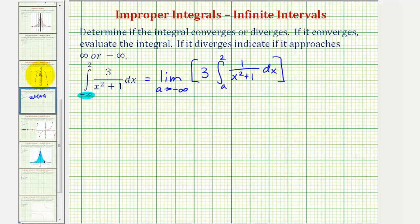But because we have a definite integral, we'll have the limit as a approaches negative infinity of three arctangent x. And we still have our limits of integration from a to two.